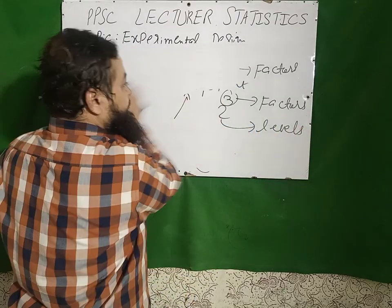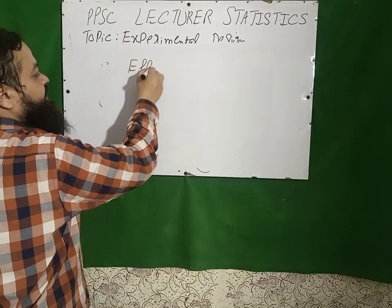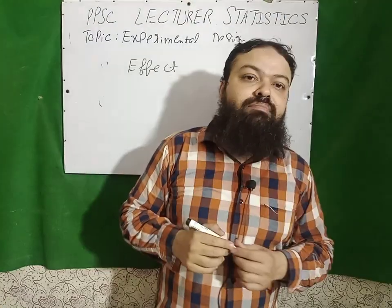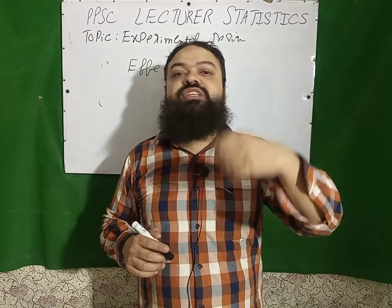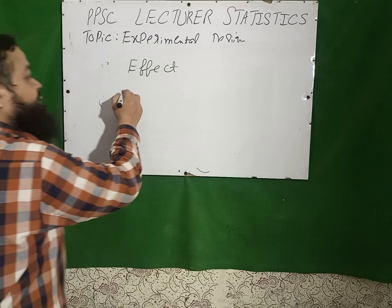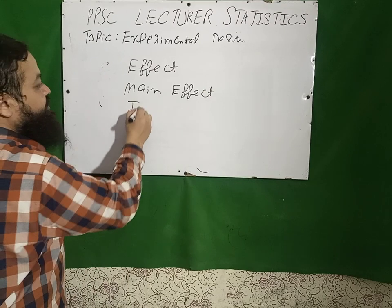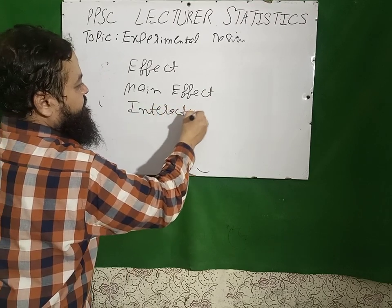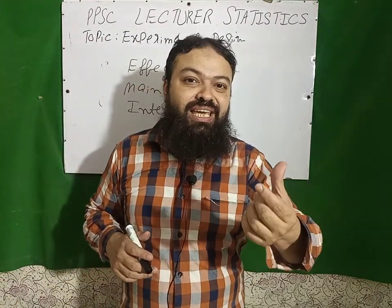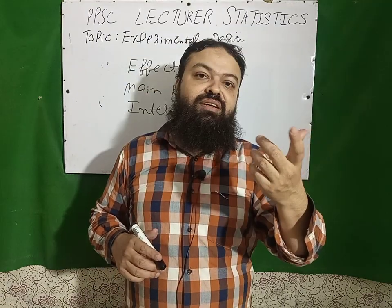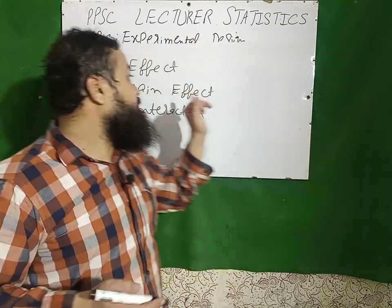Now I will tell you a very important point about effect. When we want to make the comparison of the effects of the treatments, these are the effects. There are two main types: main effect and interaction effect. If I am interested in checking the average change in the levels of the first factor, independently — not considering the other factors — it is called the main effect.